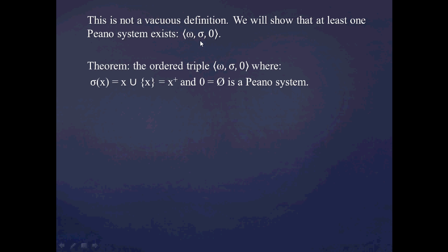So that's the definition of a Peano system, and it's not a vacuous definition in the sense that we're not defining something where it's never true. In fact, we're going to show that we know of at least one Peano system. It's going to be the ordered triple (omega, sigma, zero).